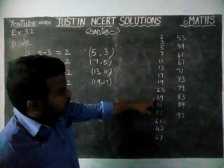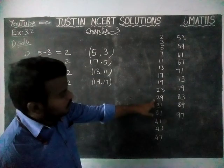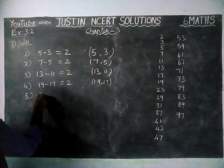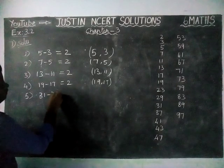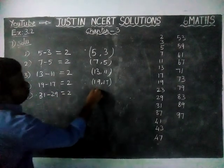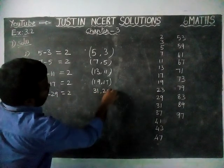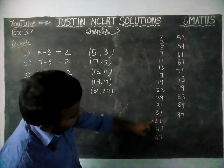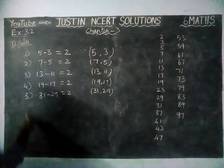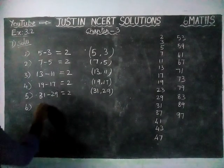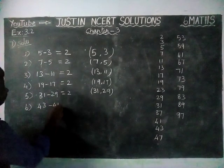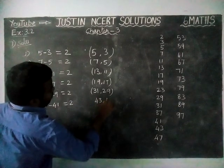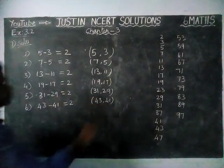23 and 29 will not form a twin prime pair. For 31 minus 29, the difference equals 2, so 31 and 29 are twin primes. Then checking 37, 41, 43 — the difference between 43 and 41 is 2, so 43 and 41 are also called twin primes.